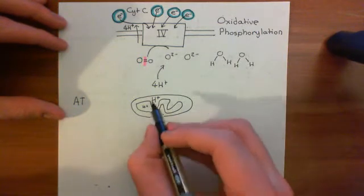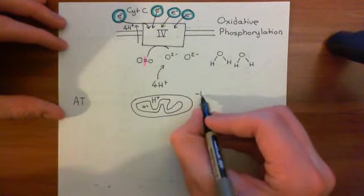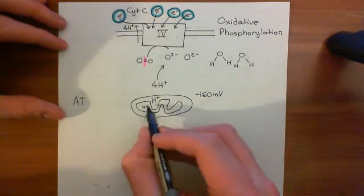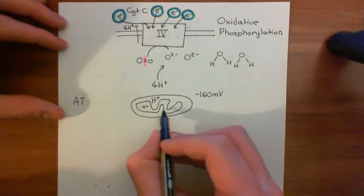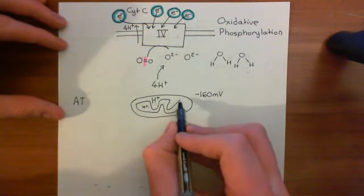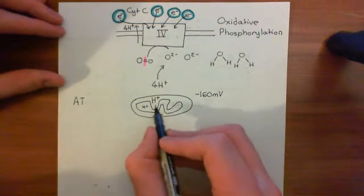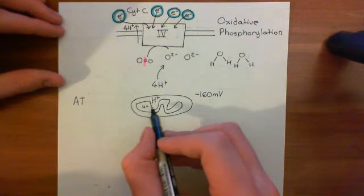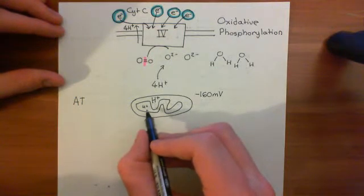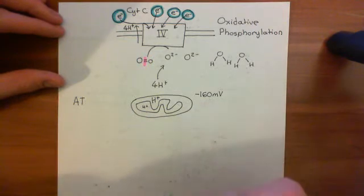In addition, the electrical gradient across this membrane is around negative 160 millivolts, meaning that the electrical potential of the matrix of the mitochondria is around 160 millivolts lower than the electrical potential within the intermembrane space. So there is a significant force pulling the protons back into the matrix, and this is called the proton motive force.